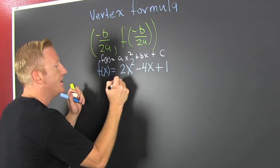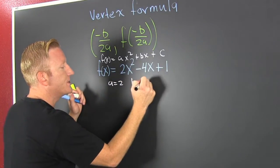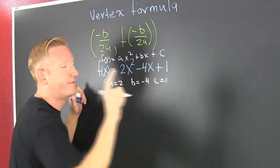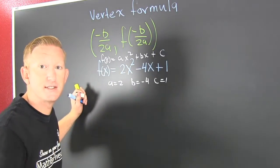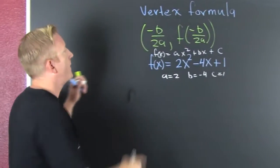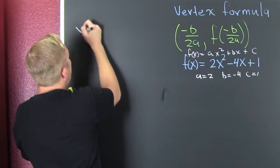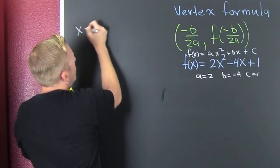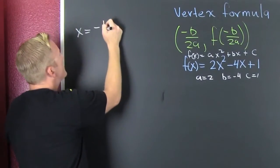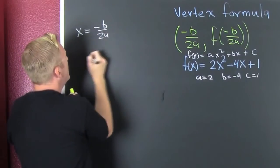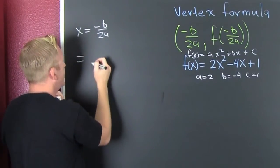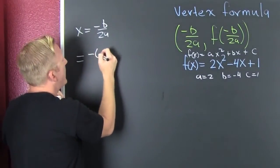So we identify the terms: a is 2, b is minus 4, and c is 1. This isn't as hard as you make it. What am I trying to do? I'm trying to find x — the x of the vertex. That's minus b over 2a.